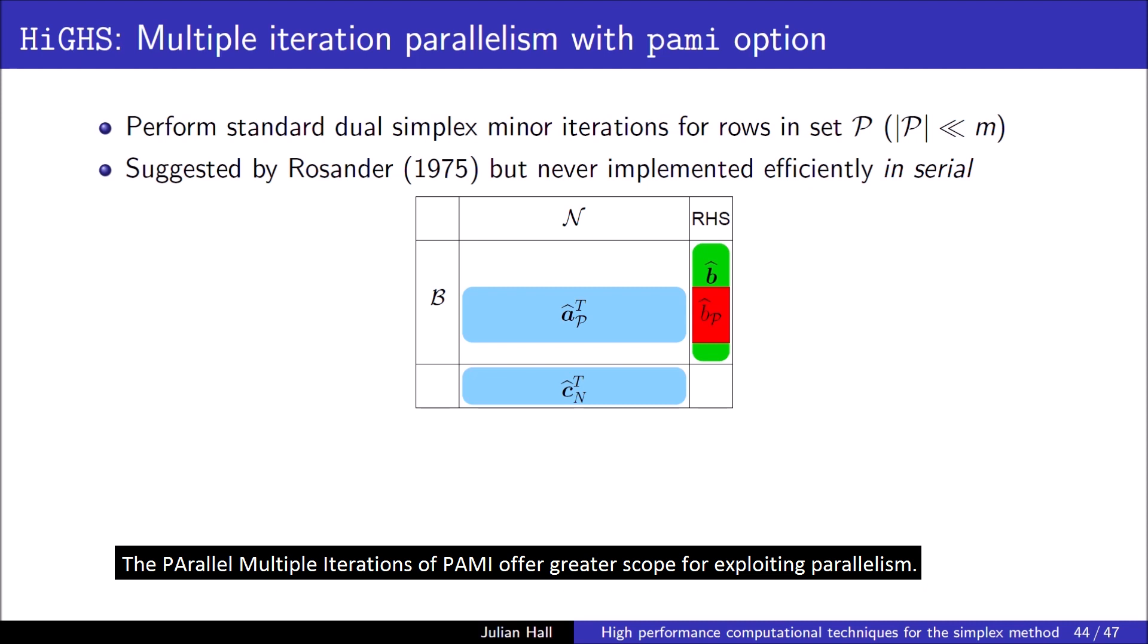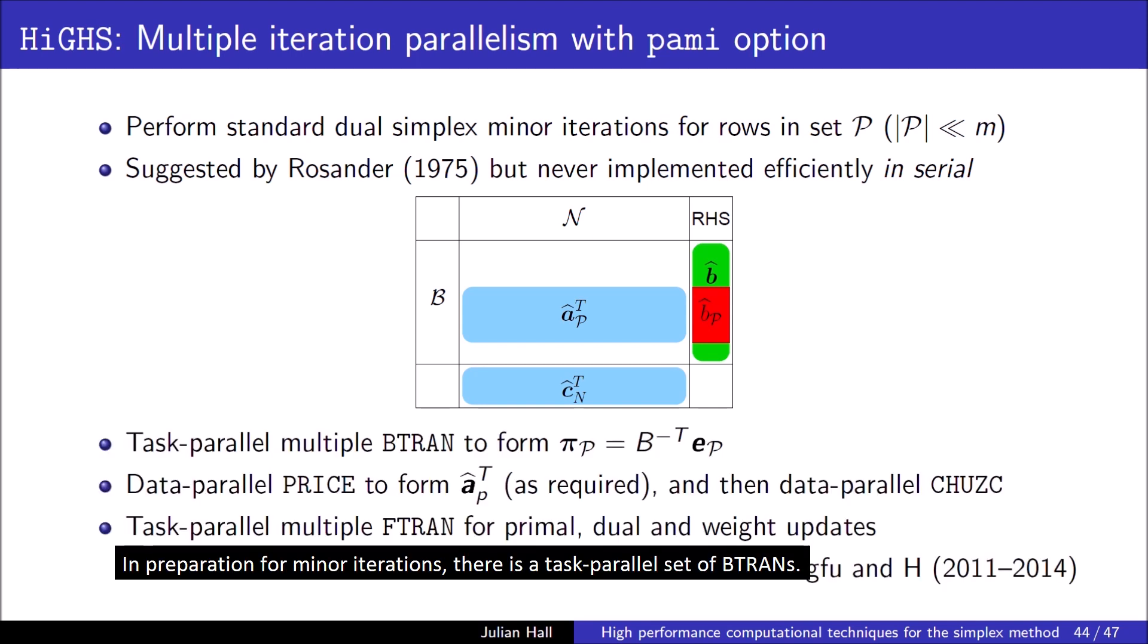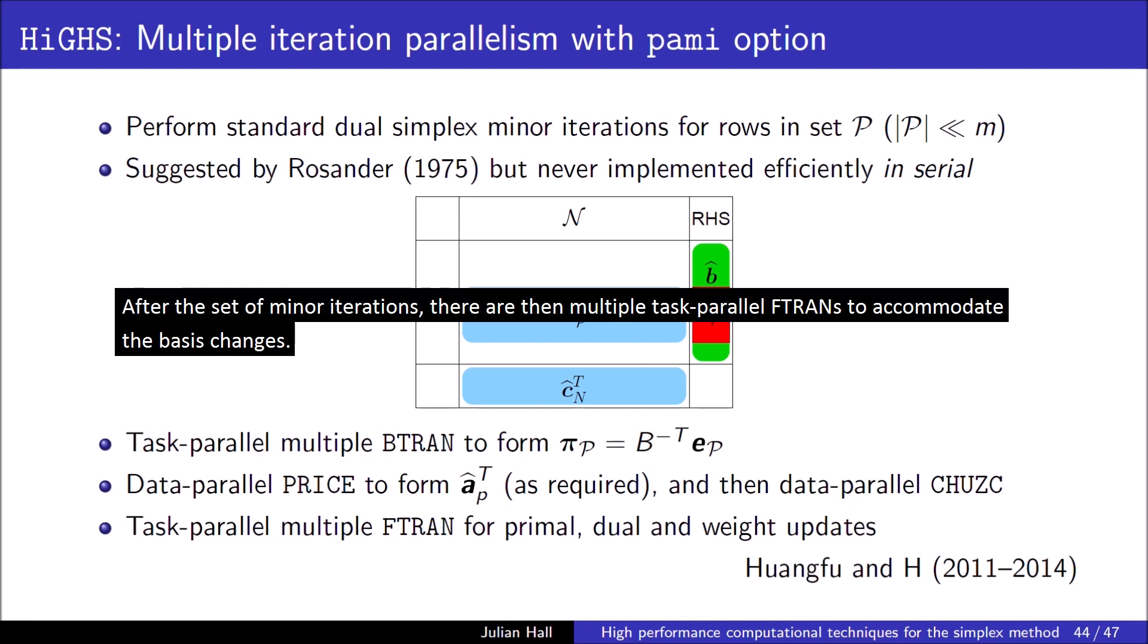The parallel multiple iterations of PAMI offer greater scope for exploiting parallelism. The technique of forming a small number of tableau rows to perform minor iterations of the standard dual simplex method isn't new, and is analogous to multiple pricing for primal simplex. In preparation for minor iterations, there is a task parallel set of BTRANs. Each minor iteration has a data parallel price, and then data parallel choose C. After the set of minor iterations, there are then multiple task parallel FTRANs to accommodate the basis changes.